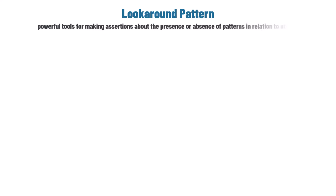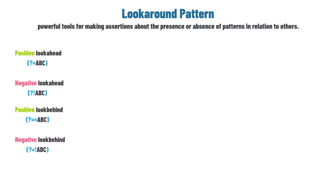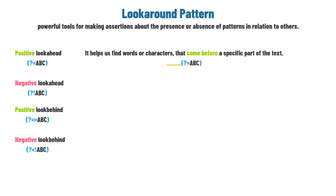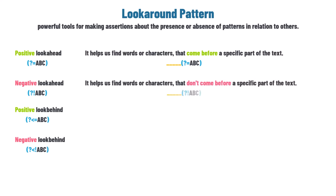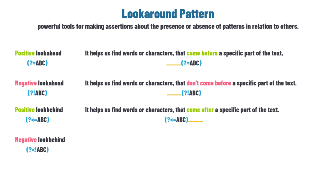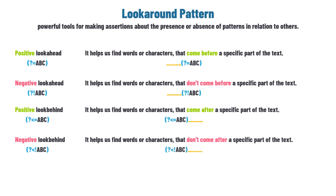Let's summarize the look-around patterns. Positive look-ahead: finds characters that come before a specific part — used after the text we want as result. Negative look-ahead: finds characters that do NOT come before a specific part — also used after the text we want. Positive look-behind: finds characters that come after a specific part — used before the text we want. Negative look-behind: finds characters that do NOT come after a specific part — used before the text we want.